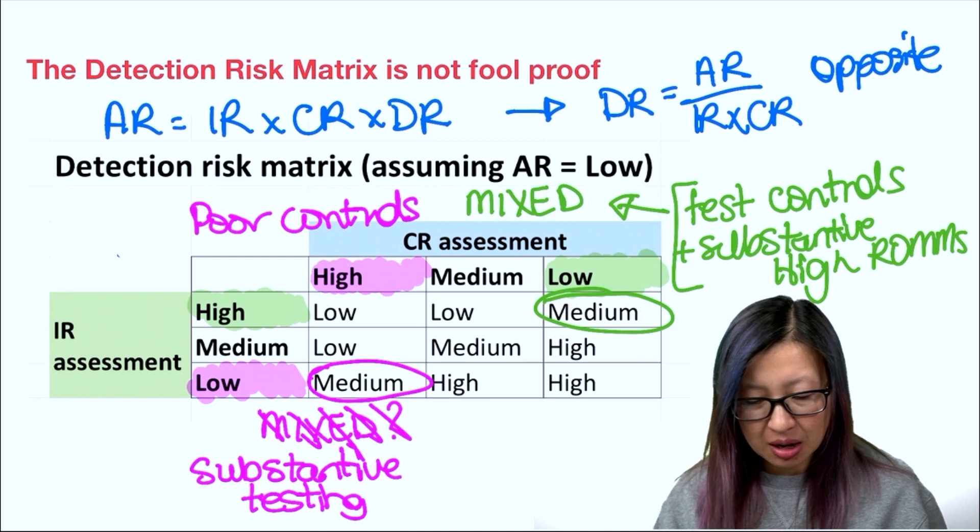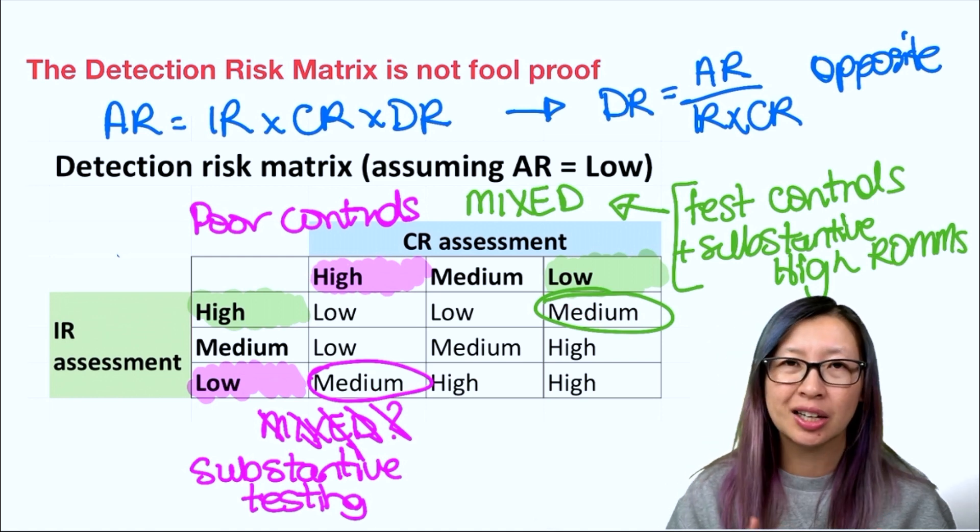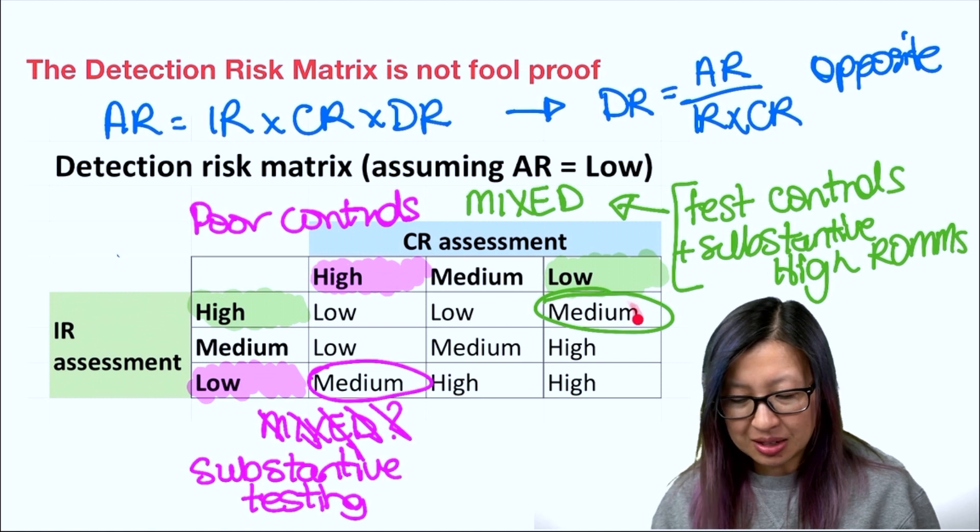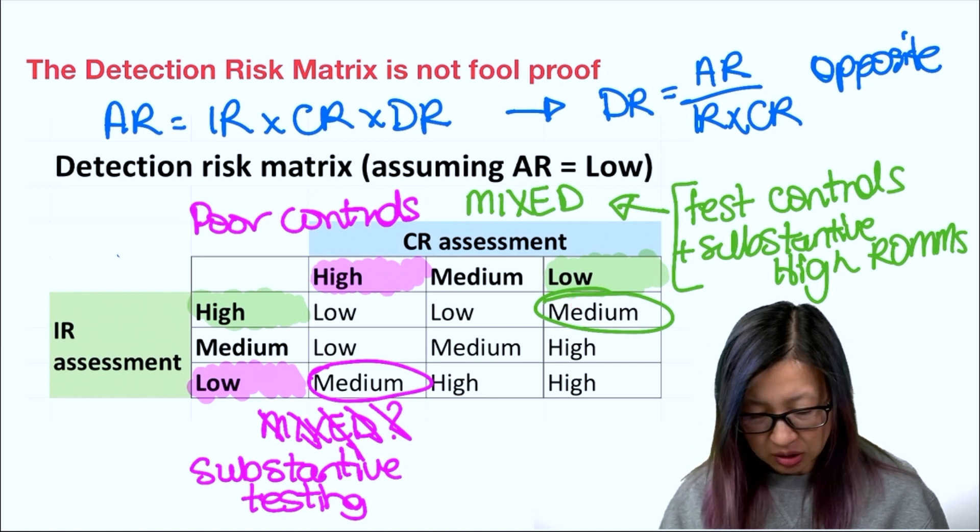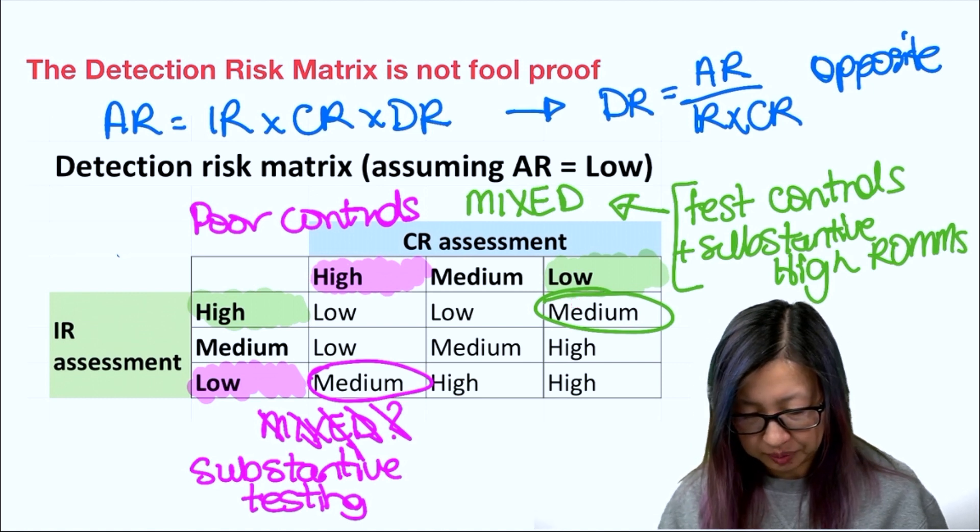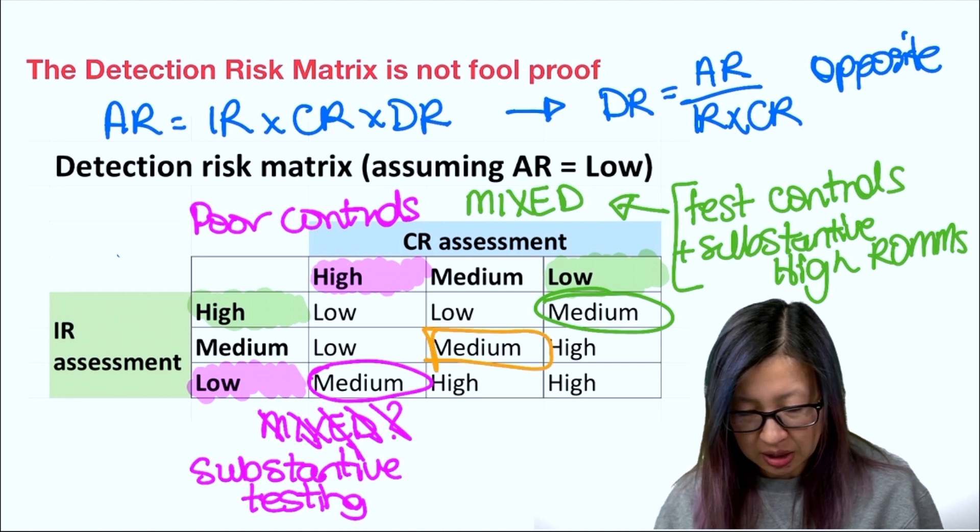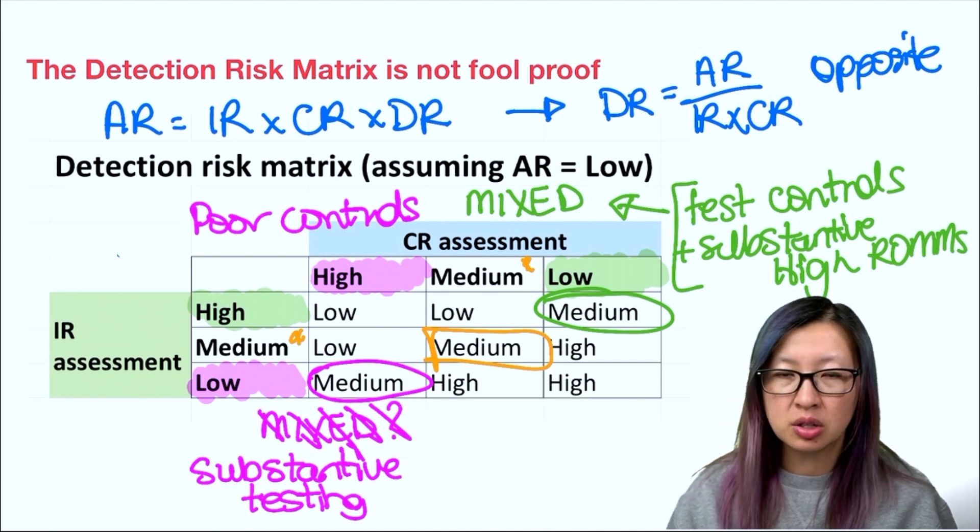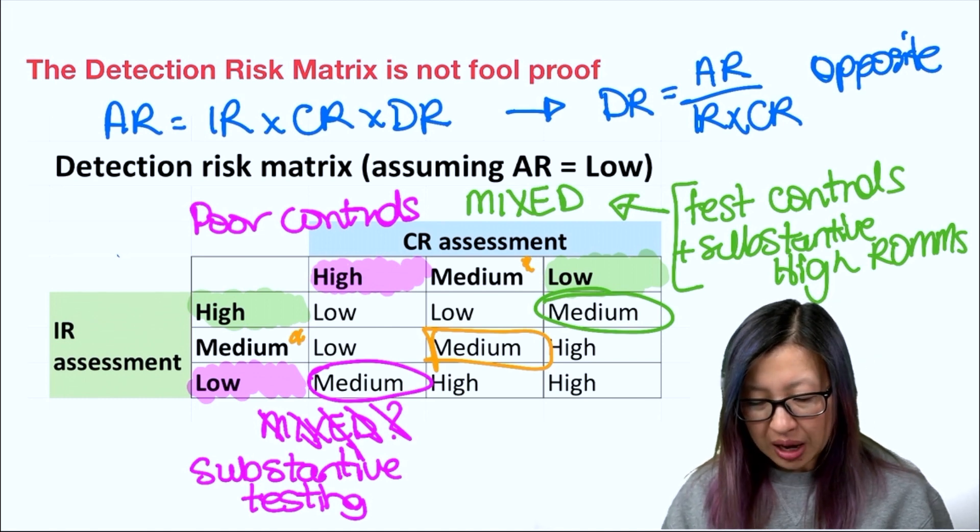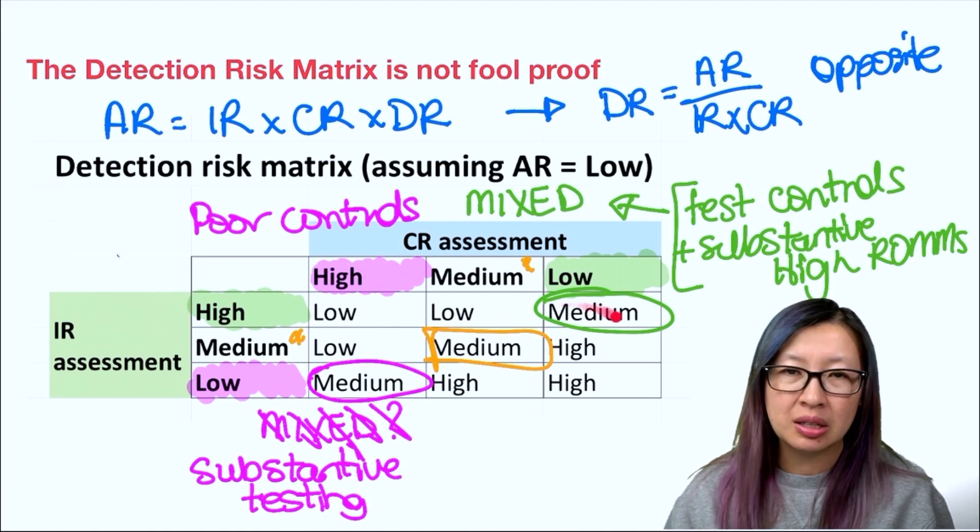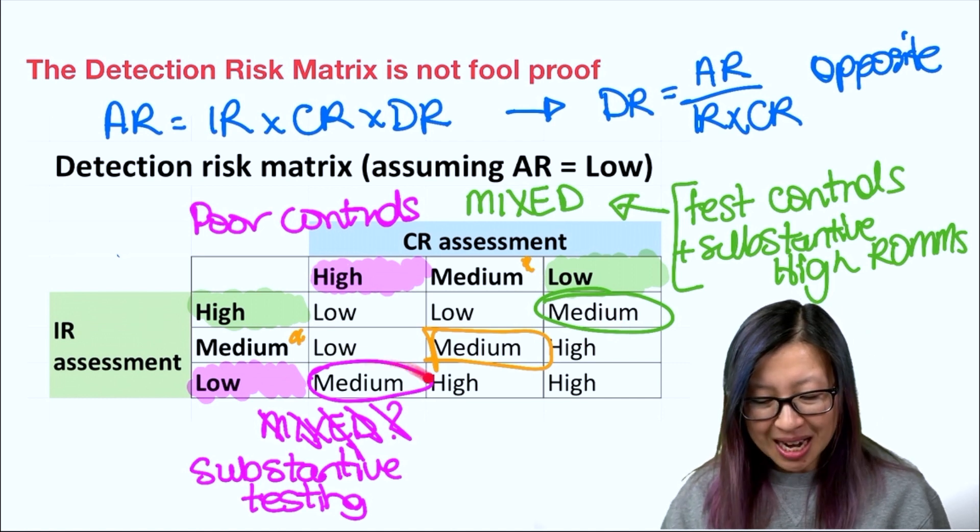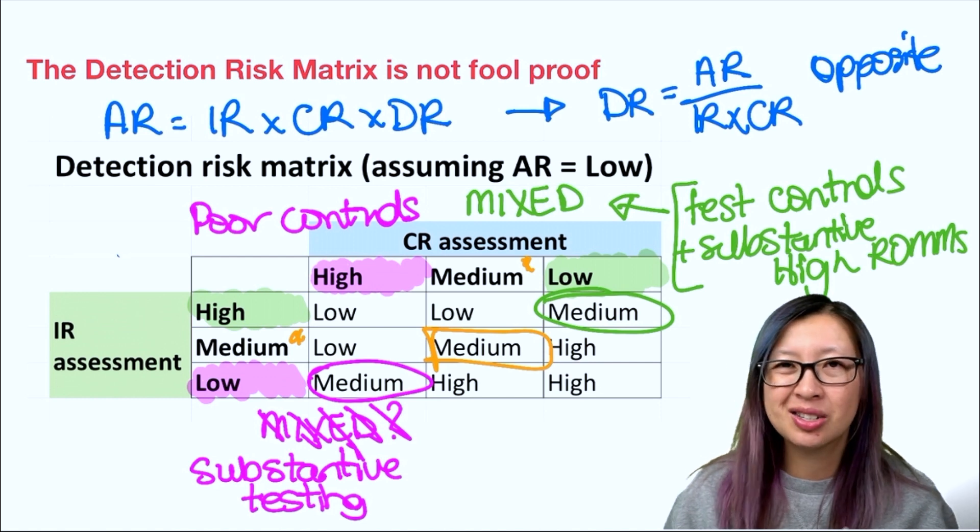So this demonstrates that medium and medium are not actually the same thing. When we say medium in this instance, medium there, and also probably medium down here in this box where I have medium controls and medium inherent risk, those two are probably a pretty good instance in which you do mixed audits. However, medium down here, mixed just doesn't make sense, and you're going to want to focus on more substantive testing.